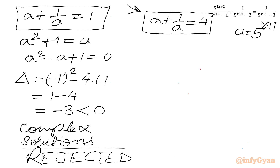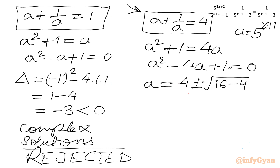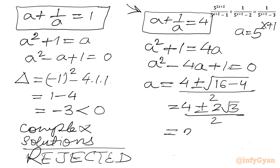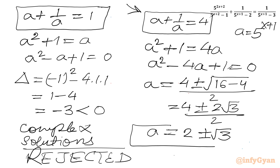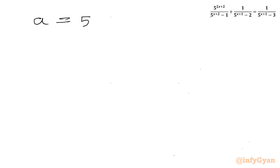For the second equation, a + 1/a = 4: multiplying by a gives a² - 4a + 1 = 0. Applying the quadratic formula: a = [4 ± √(16 - 4)] / 2 = [4 ± √12] / 2 = 2 ± √3. Both values 2 + √3 and 2 - √3 are positive, so both are valid.